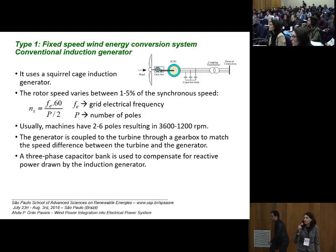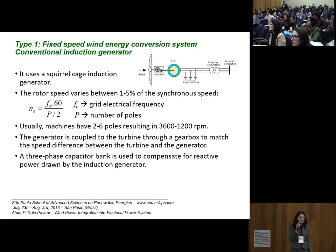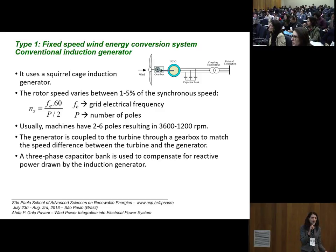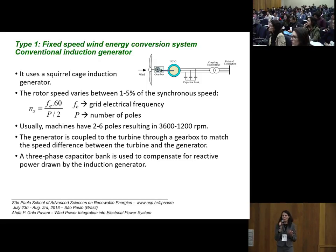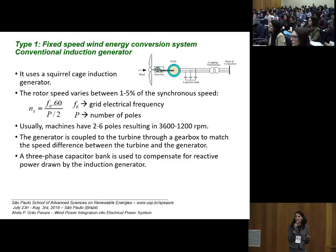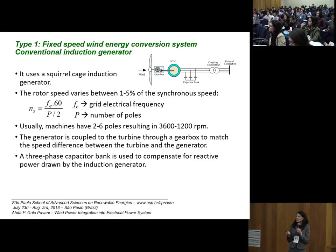The first type of wind energy conversion system is the fixed speed. It uses a conventional squirrel cage induction generator to convert mechanical energy to electrical energy. The rotor speed of a squirrel cage induction generator typically varies between 1% to 5% of the synchronous speed.